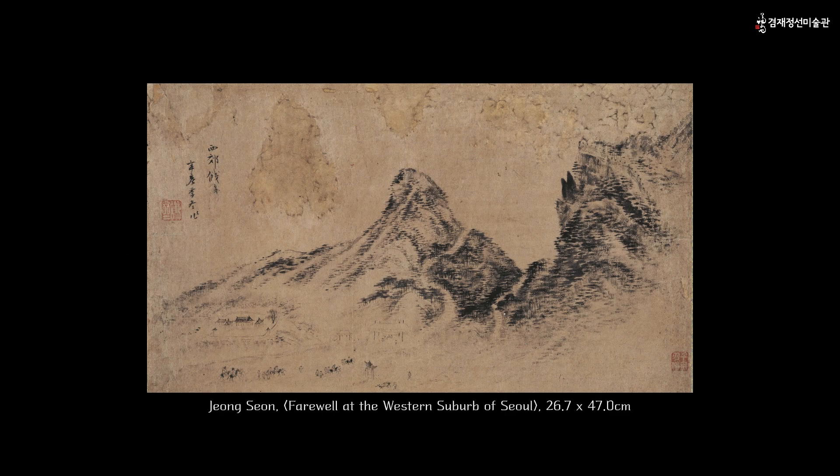Capturing the Ideals of the Nobility: Farewell at the Western Suburb of Seoul, titled Seogyo Jeonwido in Korean, depicts a farewell scene for his close friend Lee Chun-jae, who was leaving for China as an envoy. The scene is set in the western outskirts of Hanyang, near present-day Dongdipmun Gate.